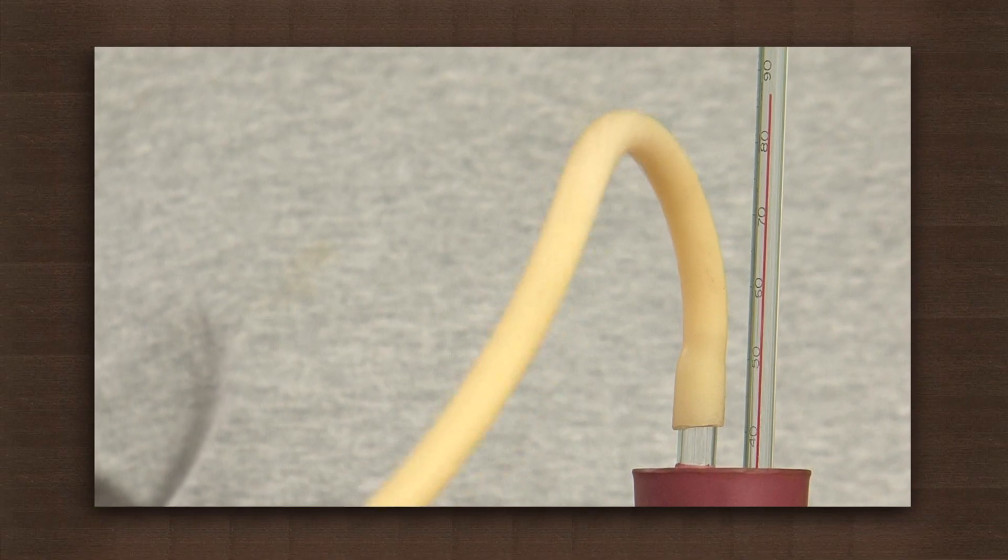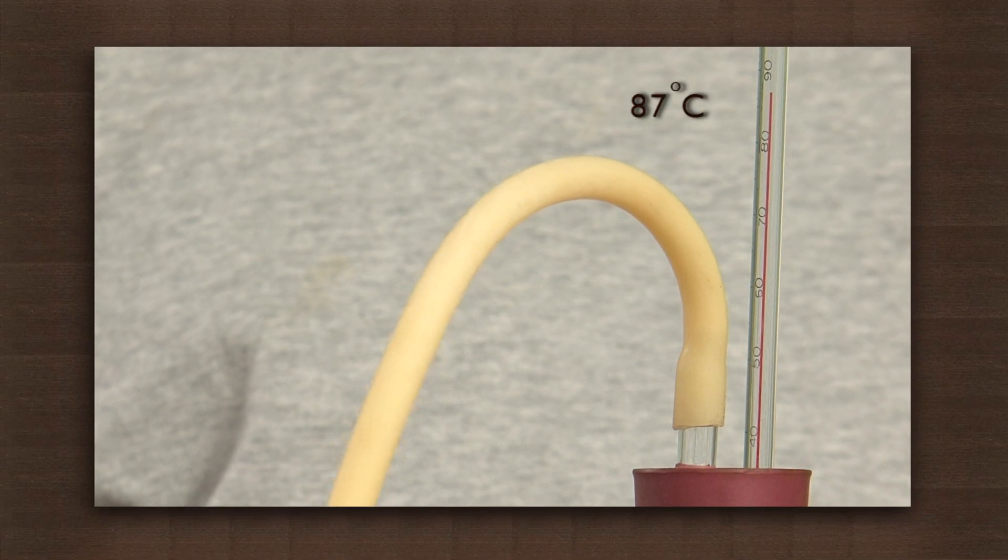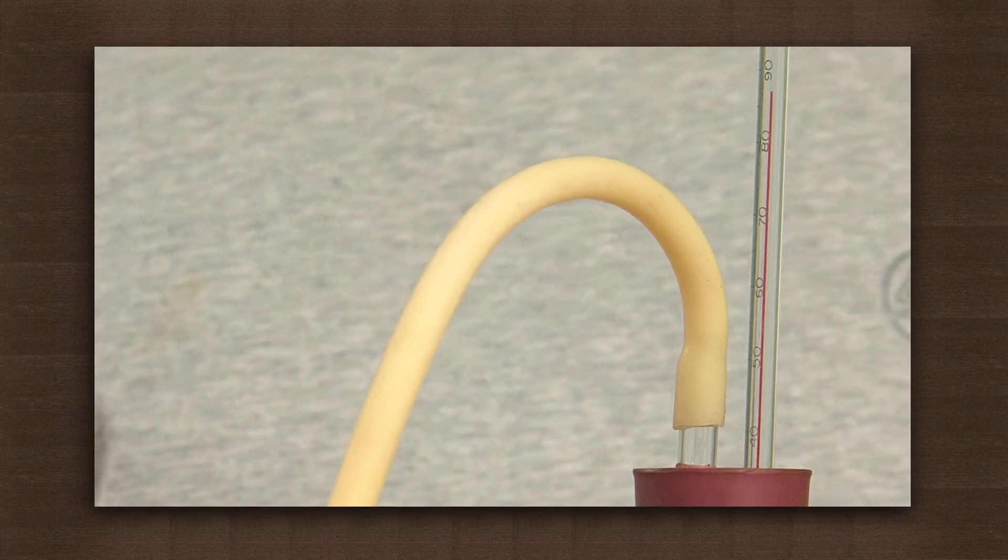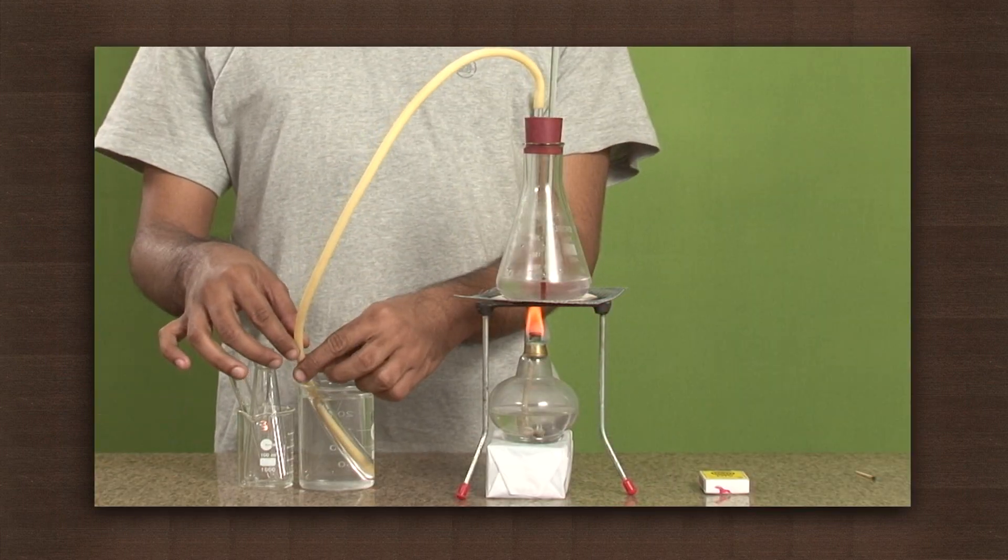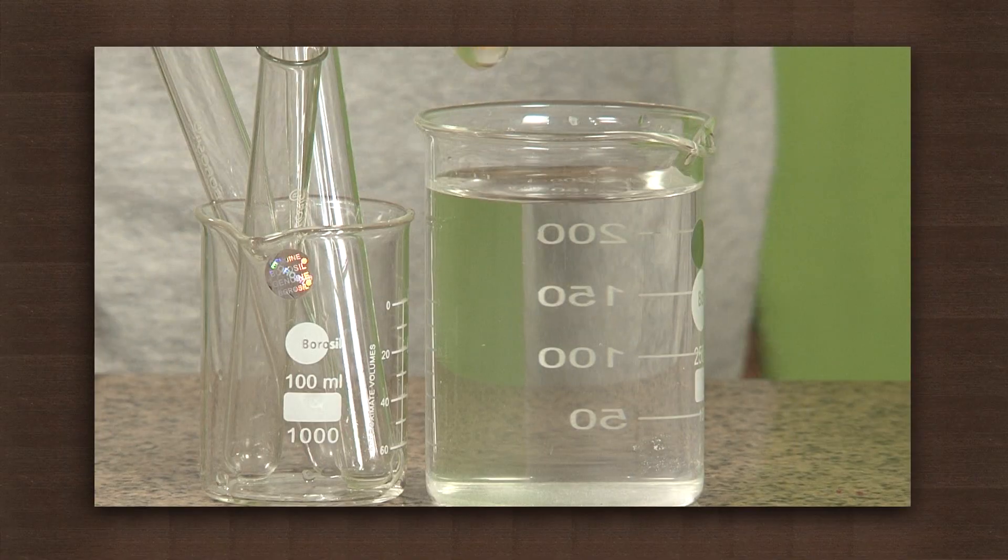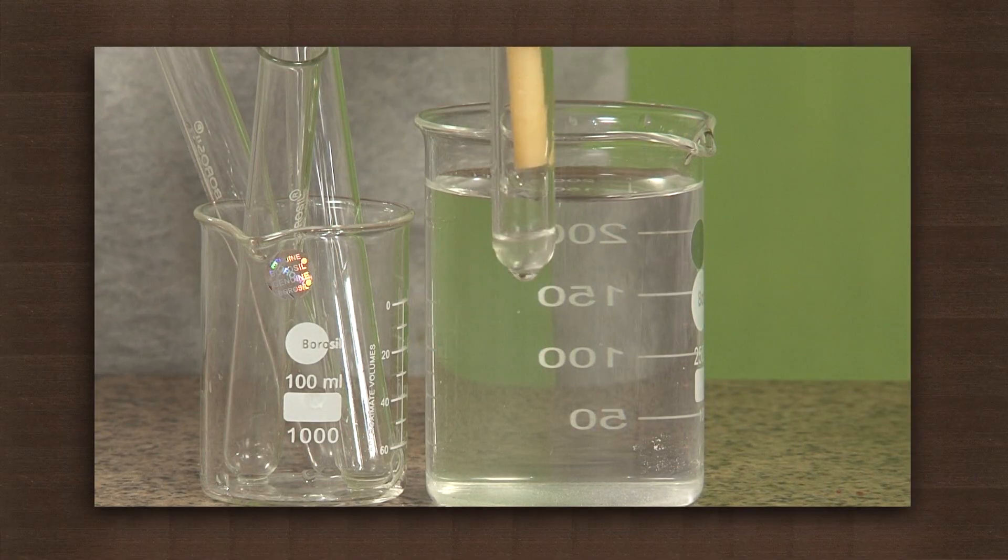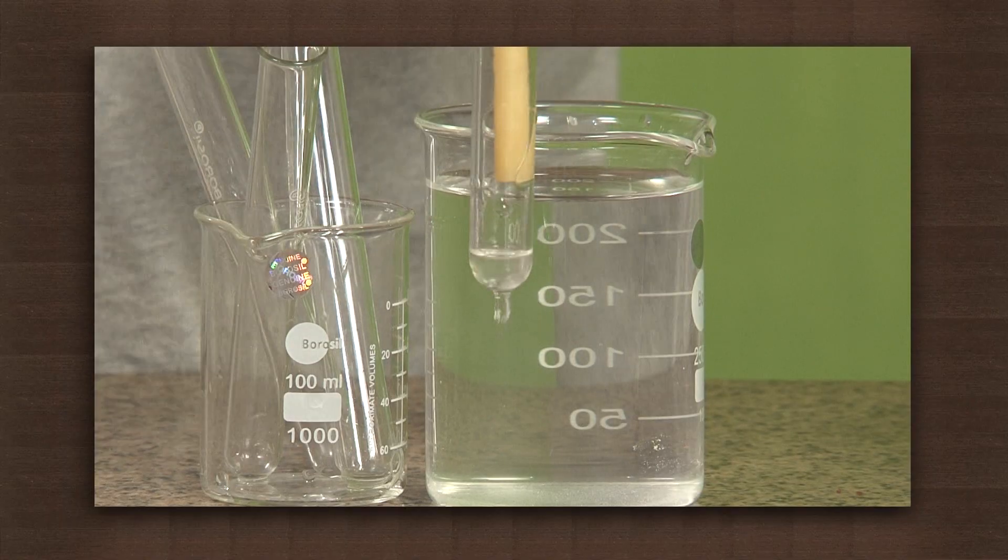Note the temperature at which the solution starts boiling. It reads 87 degrees Celsius. Alcohol vapors formed here pass through the delivery tube into the test tube which is kept in the cold water. The vapors condense and turn to liquid alcohol in the test tube.